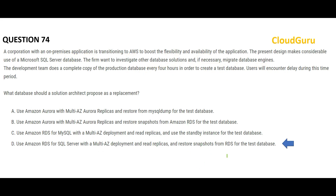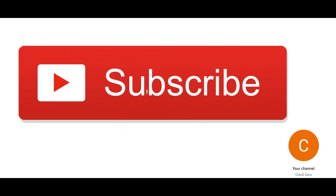Option D is perfect — Multi-AZ deployment, read replicas, and restoring snapshots for the test database from RDS itself. When creating the test database, you should restore from read replicas, not the primary. This isolates the two operations — the primary database handles production operations while the test database copy is made from the read replica — resulting in no load, no downtime, and no delay.